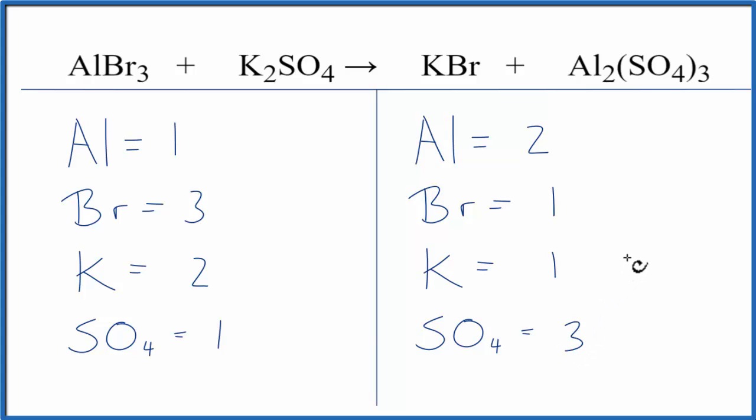Let's start by balancing the aluminums. We could put a two in front of the AlBr3, so one times two, that would give us two, those would be balanced. The two applies to everything, so three times two.